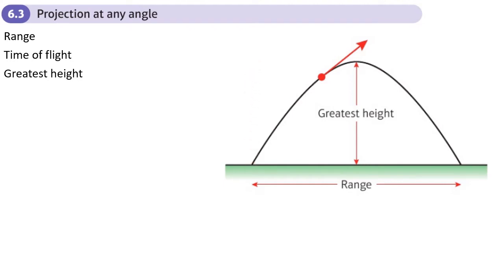So at the greatest height, the horizontal velocity is the same as it was at the start, whereas the vertical velocity is zero. It's worth noting that at the greatest height, vertical velocity Vy equals zero. So if you want to find the greatest height, you need to be working in the vertical and make v equal to zero.